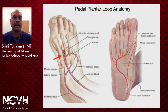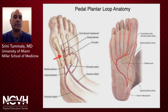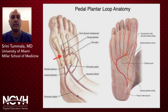When you think of pedal plantar loop anatomy, I want to point out a significant landmark. When you're looking fluoroscopically, you really want to look between the bases of the first and second metatarsal. We're talking about the anterior tibial artery continuing into the dorsalis pedis, and at the base of the first and second metatarsal, that's the first turn into the deep perforating artery, which then comes back to the lateral plantar artery and then back to the posterior tibial artery. That's your pedal plantar loop.